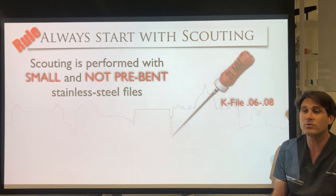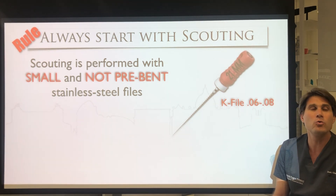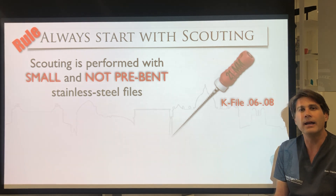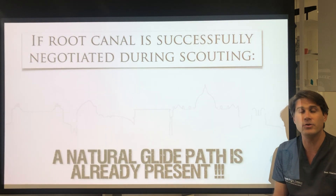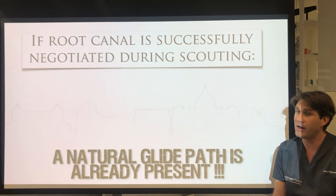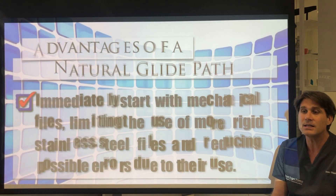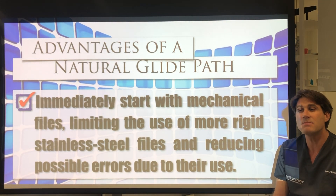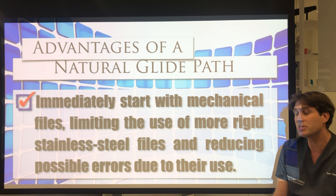The rule in our treatments is always to start scouting with a small, not pre-bent stainless steel file — usually number 6 or number 8 — just to understand the anatomy, study the orientation of the root canal, whether it is large or strict, and the trajectory of the root canal. If the root canal is successfully negotiated during scouting up to the working length, it means a natural glide path is already present, because the vessels and nerves create this natural glide path. This has the advantage that we can immediately start with mechanical files, limiting the use of more rigid stainless steel files and reducing possible errors from their use.